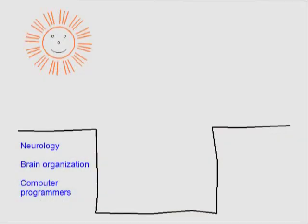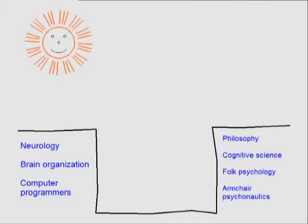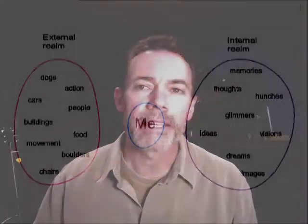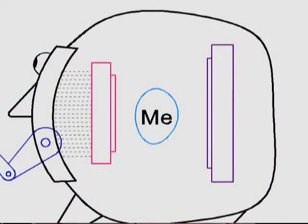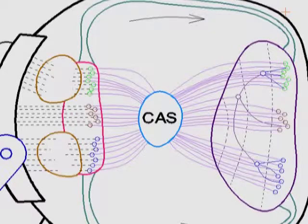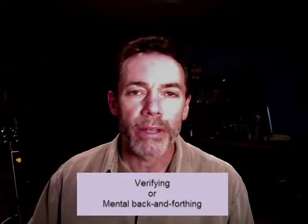Hello and welcome back to my video series on a theory of consciousness. The basic goal is to create a bridge across the explanatory chasm that exists between the realm of neurology and the realm of first-person experience. In the previous video we started with a sketch that described the way consciousness felt from a first-person perspective, and I identified two simple examples. The first was automatic memory stimulation. In this video I want to address the second: verifying a memory, or mental back-and-forthing.